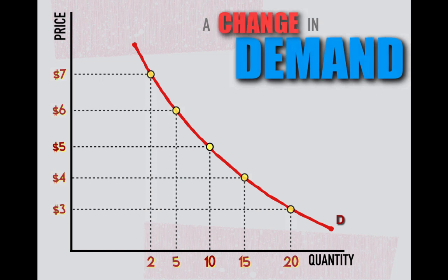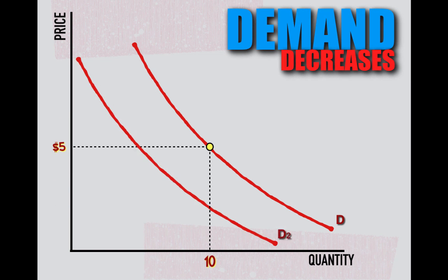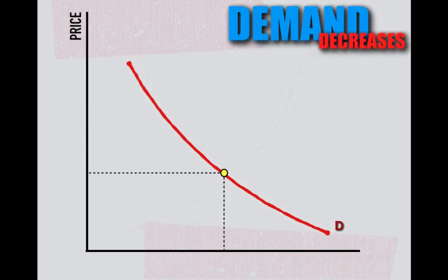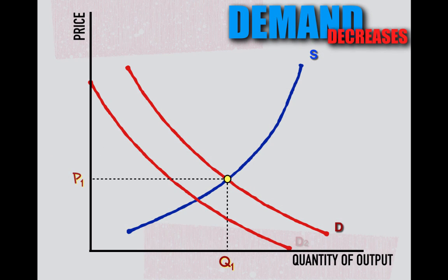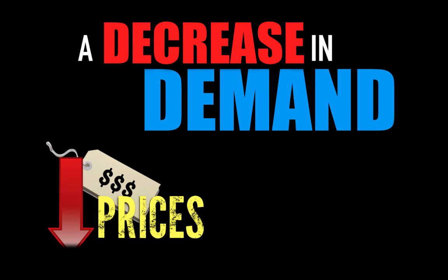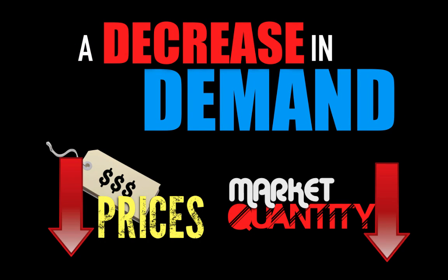When factors fundamentally cause demand to decrease in the market, consumers are less willing and able to demand the same quantity at every price level, or are only willing to pay lower prices at every quantity. A decrease in demand causes the demand curve to shift to the left, and at a new equilibrium point with supply, price level decreases and quantity of output decreases. So a decrease in demand in the market will cause product prices to decrease and market quantity to decrease.